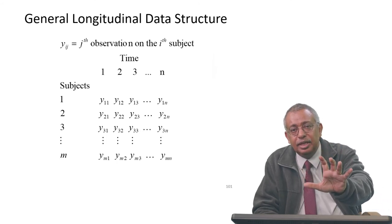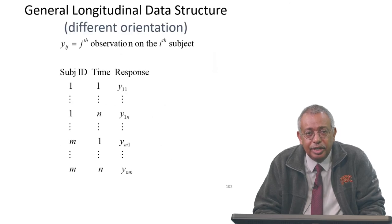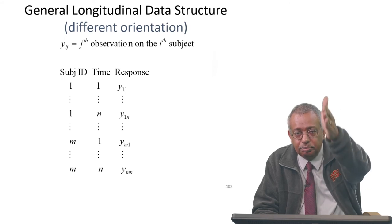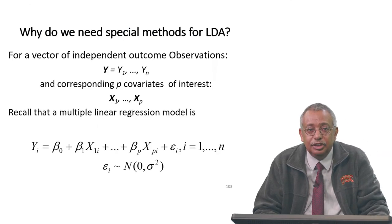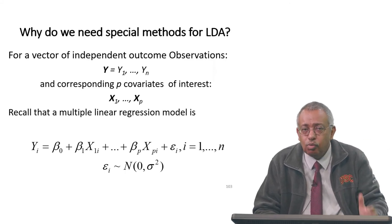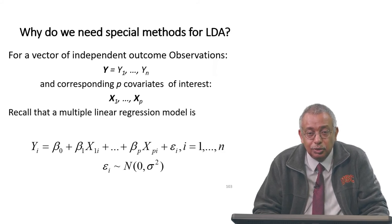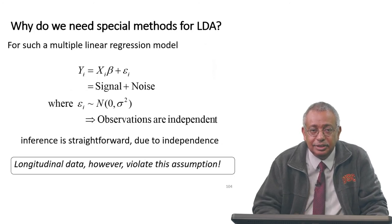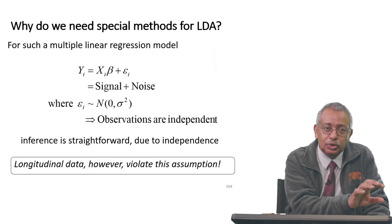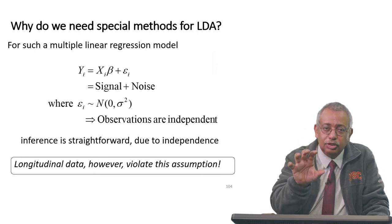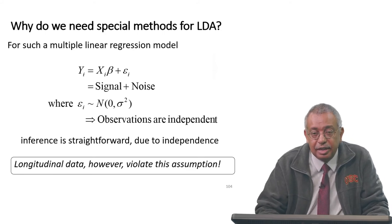The structure of longitudinal data is important. You can lay it out with individual participants on the horizontal axis and time points as columns (wide format), or have each subject's time points in different rows (long format). Different software programs prefer one format or the other, so you have to pay attention to that. This brings us back to why we need special methods for longitudinal data analysis — the independence assumption is clearly violated with correlated data.